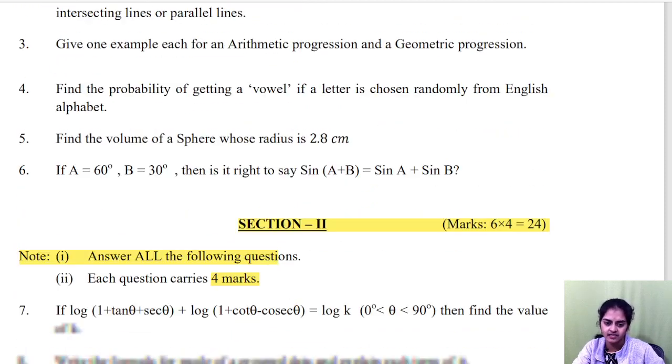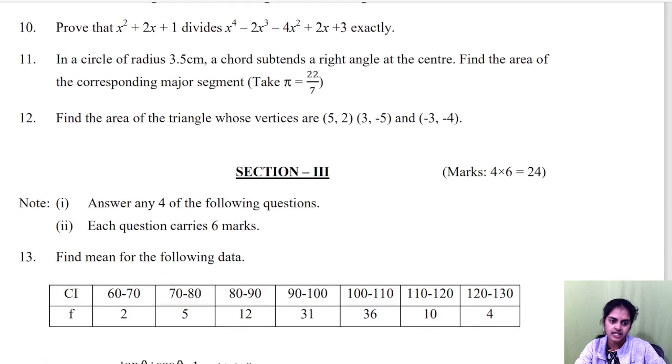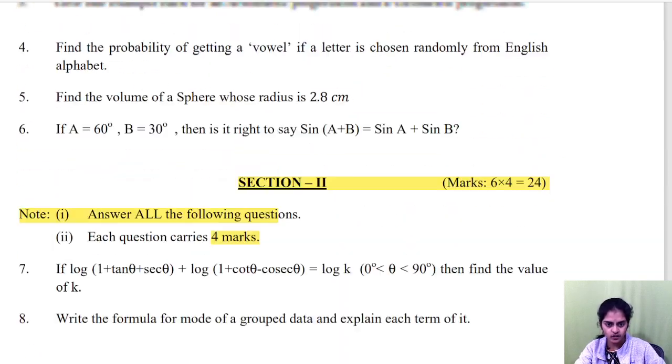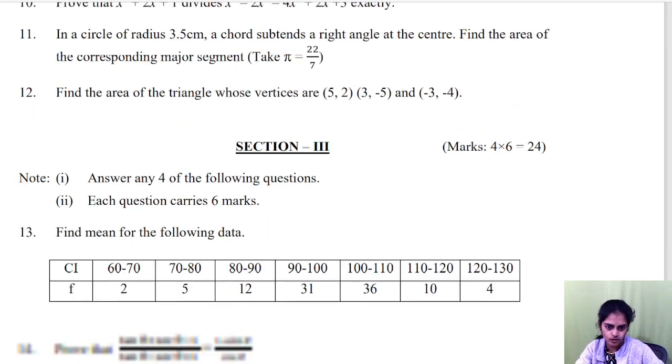Section 2 is short answer, 4 marks question. Earlier it was 3 marks. Here also you have 6 questions. Section 1 also 6 questions. Total 6 plus 6 questions you have to answer. No choice.